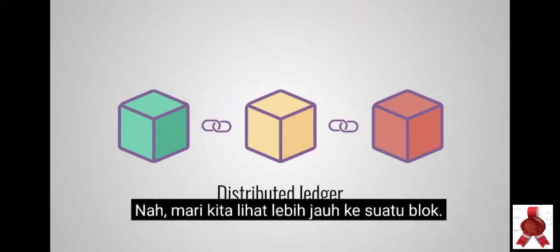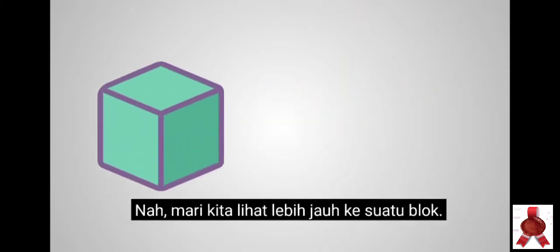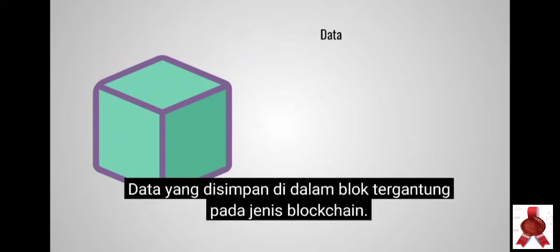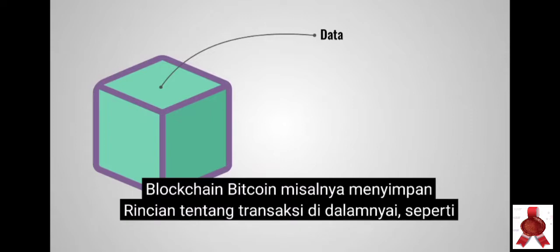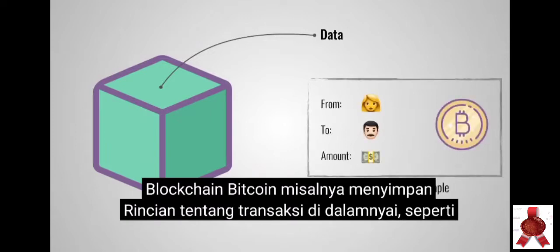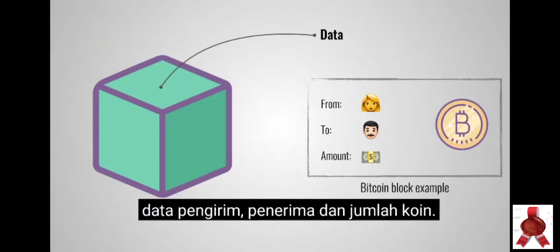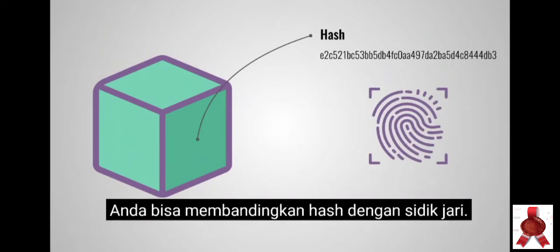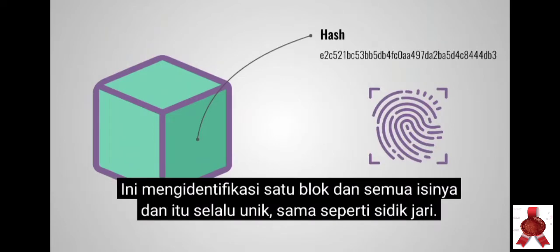So how does that work? Let's take a closer look at a block. Each block contains some data, the hash of the block, and the hash of the previous block. The data stored inside the block depends on the type of blockchain. The Bitcoin blockchain, for example, stores the details about a transaction, such as the sender, receiver, and the amount of coins. A block also has a hash — you can compare a hash to a fingerprint. It identifies a block and all of its contents and it's always unique, just as a fingerprint.